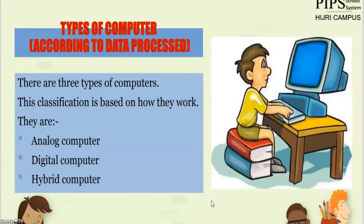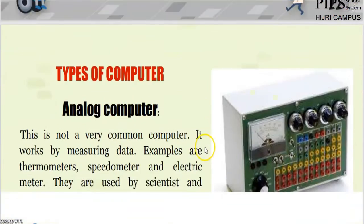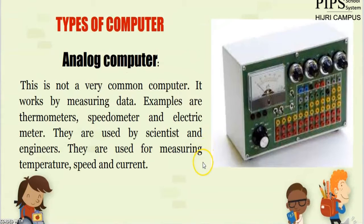Analog computers process data in the form of frequency and sound — in analog form. Digital computers process data in digits, ones and zeros. Hybrid computers combine both analog and digital processing together.